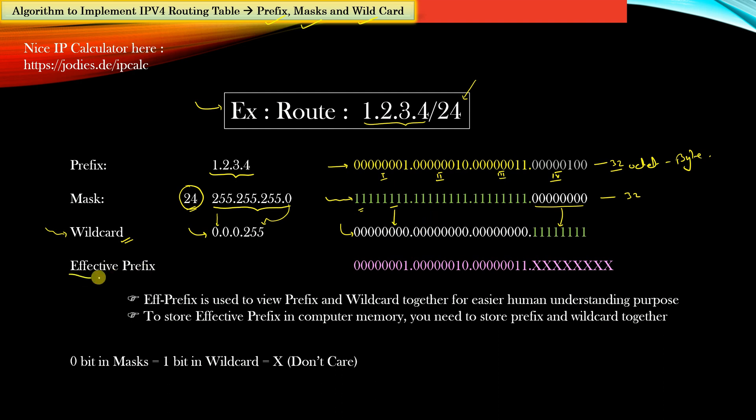Then comes the effective prefix. Effective prefix is nothing but you are trying to view the prefix and the wildcard as one single logical thing. In effective prefix you take the bits from the prefix, as many bits as equal to this mask number which is 24. So you have taken 24 bits from the prefix and the remaining bits will come from the wildcard. In a wildcard, in whatever positions you have 1, represent those 1 by X. Here X represents don't care.